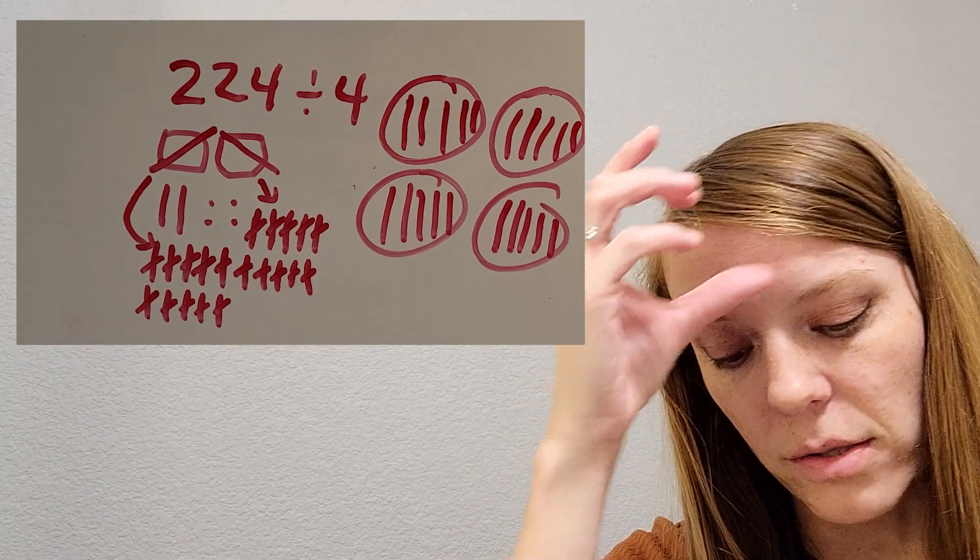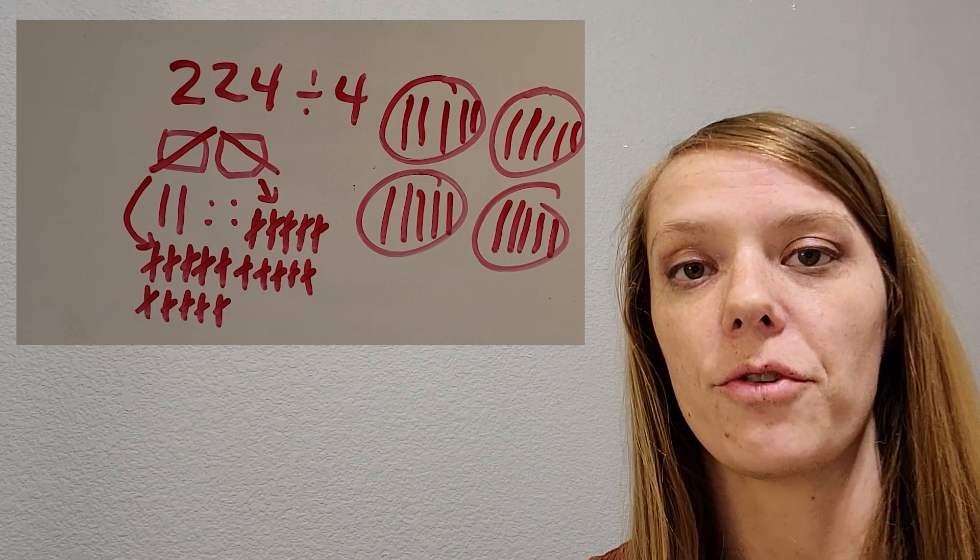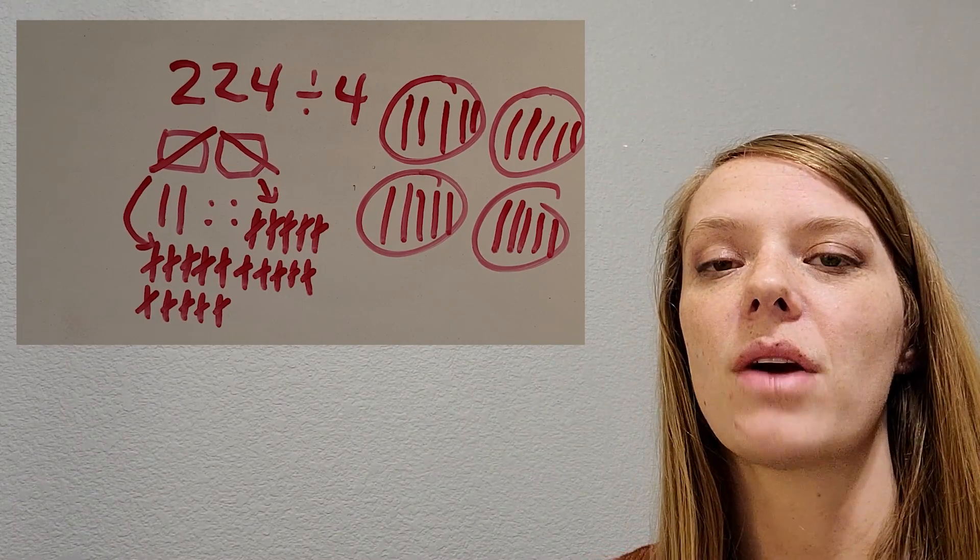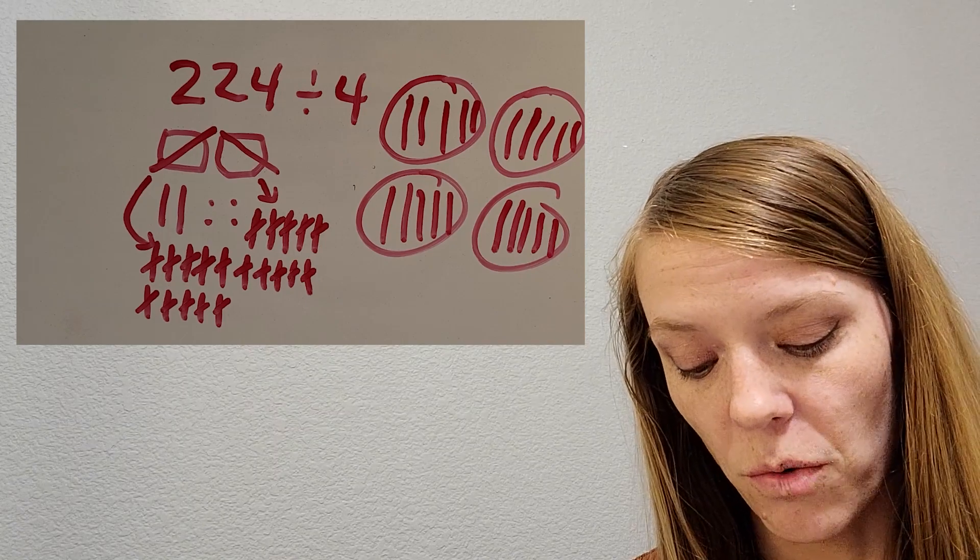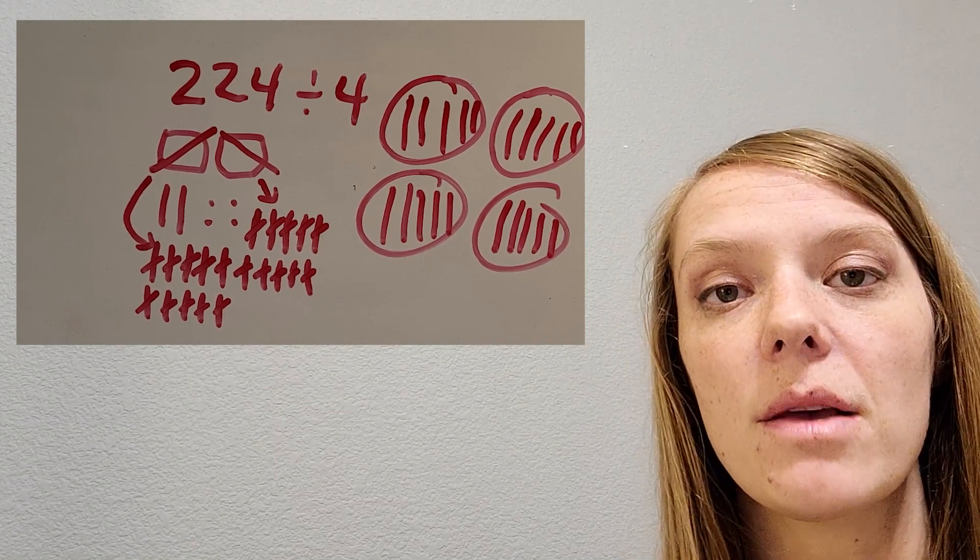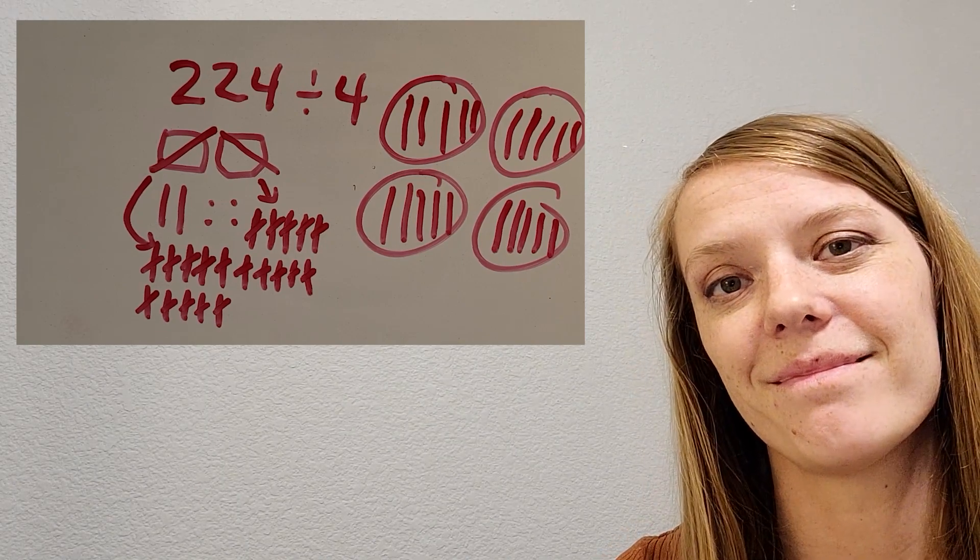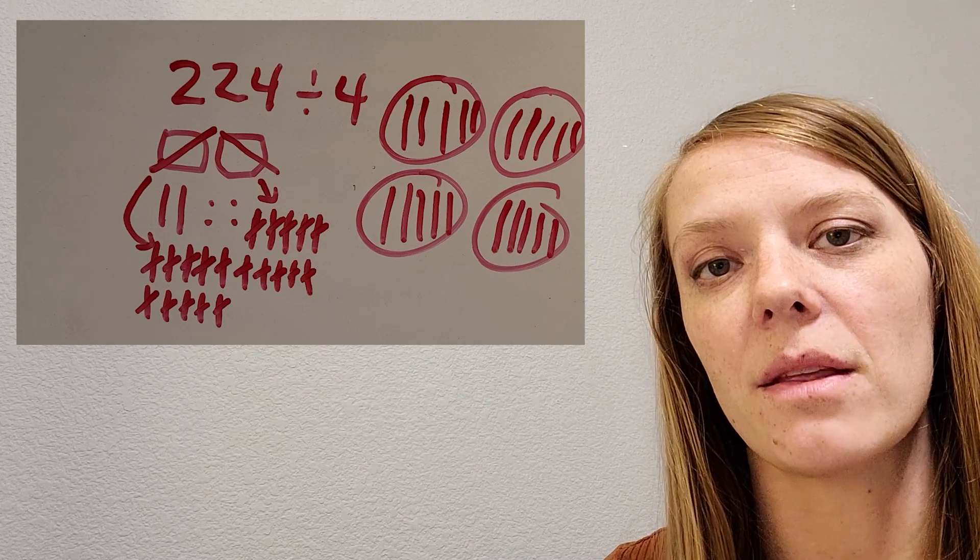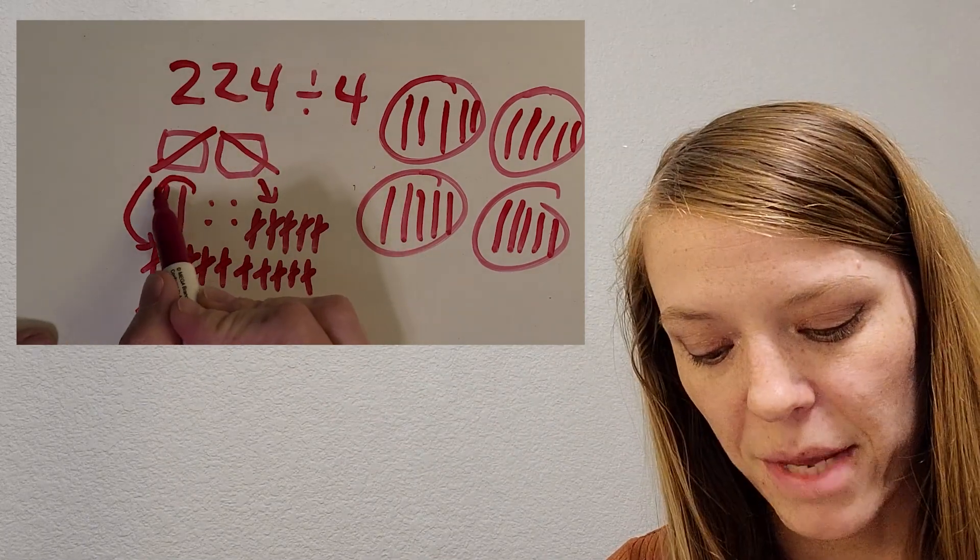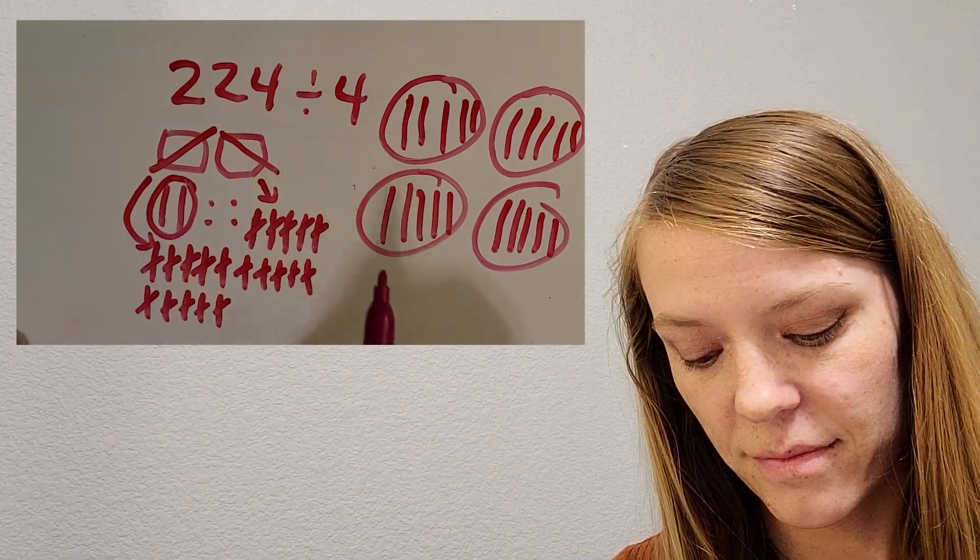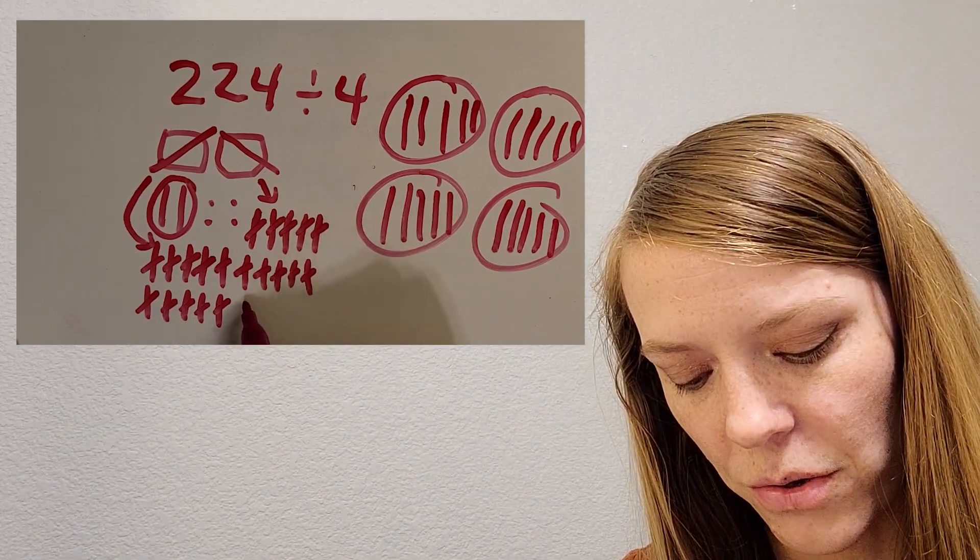Is that enough to start separating those into the groups? Okay, you got it. That is not enough. So we will have to do something with those. So what do you think? Is there something that we can do to break those up? Just like we broke the flats up? Okay, you got it. We can break the longs up into ones. So I'm going to do that. I have two longs. How many ones would that be? Okay, you got it. 20 units or ones. So I'm going to draw those real quick.